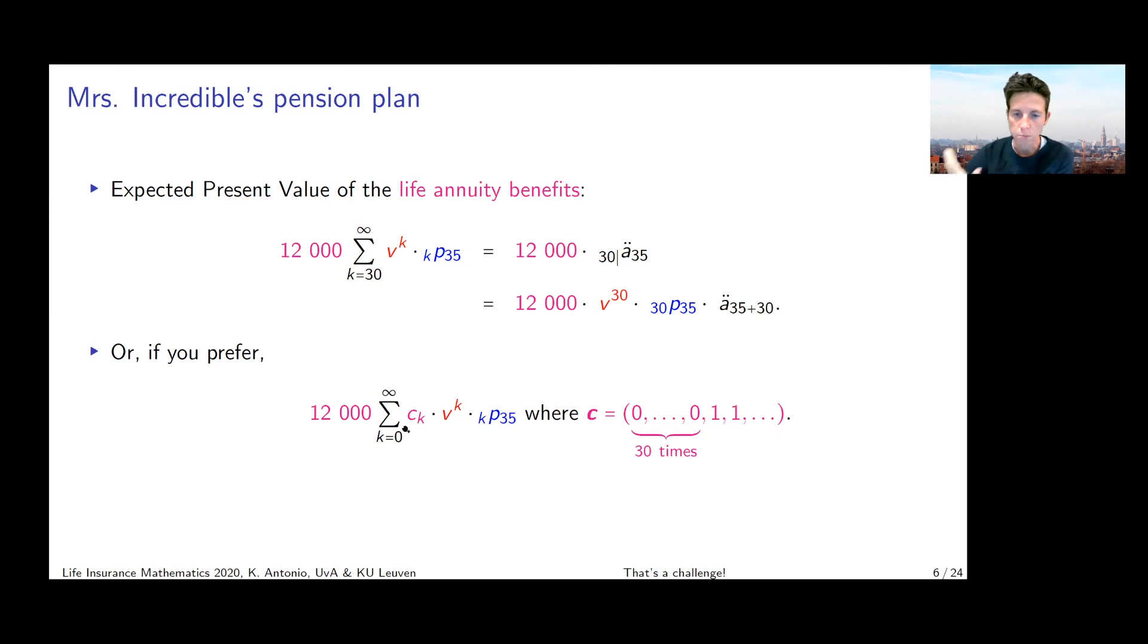So if I have this P times the vector row, then I can use it directly as well to value my premiums. So that's for the EPV of the premiums.